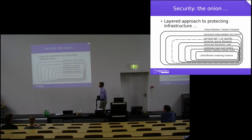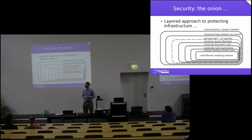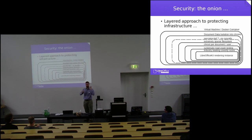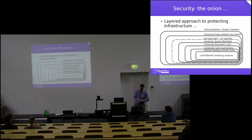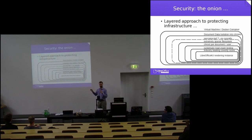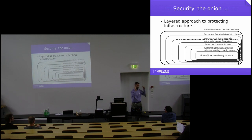We want to add seccomp-bpf on top of that — a nice thing that allows you to filter system calls. There are actually no device nodes in the chroot either, so in terms of attack vectors it's pretty hard to find a weird security vulnerability. Seccomp-bpf will allow us to say 'only these system calls — not the weird exotic ones.' The document data is isolated into those chroots, and ideally we put this inside a virtual machine or Docker container inside your infrastructure so if something goes bad it won't spread.